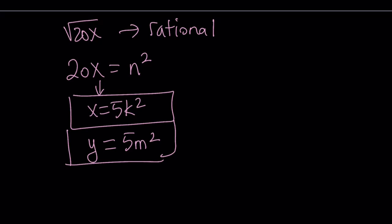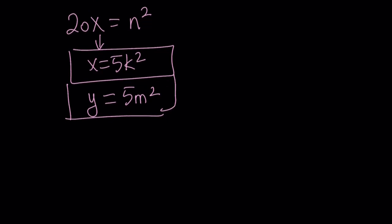Now, since we know that x and y can be written like this, let's go ahead and plug these into the original equation, which was 1 over square root of x plus 1 over square root of y equals 1 over square root of 20.